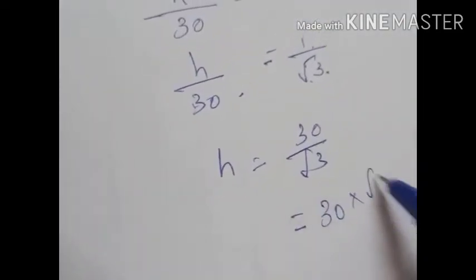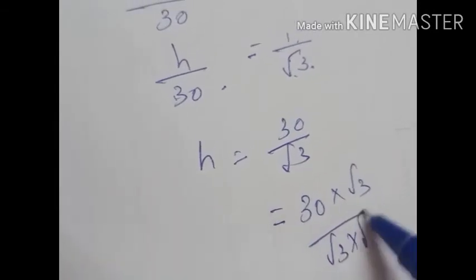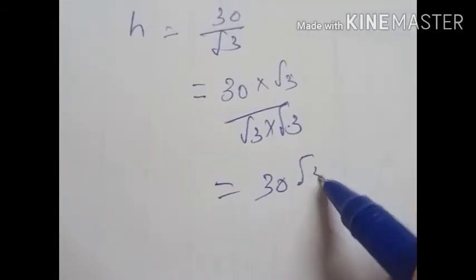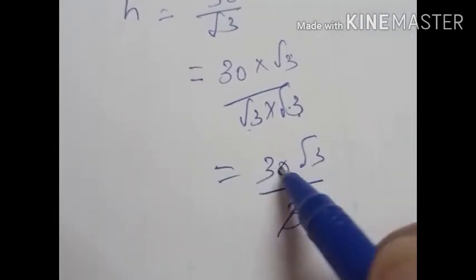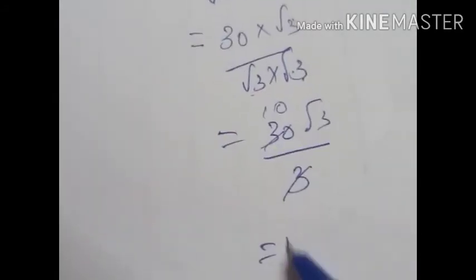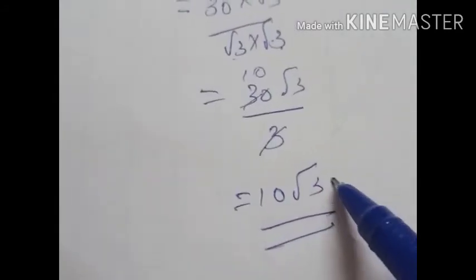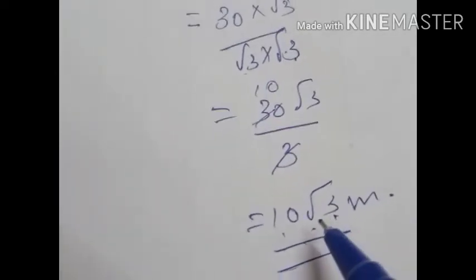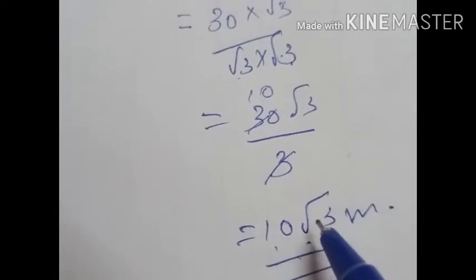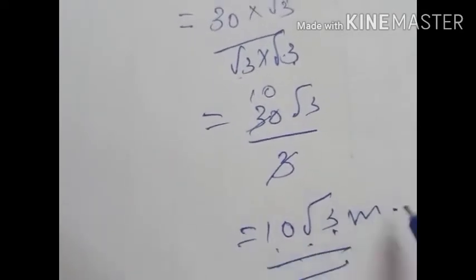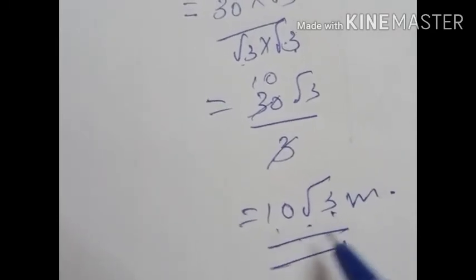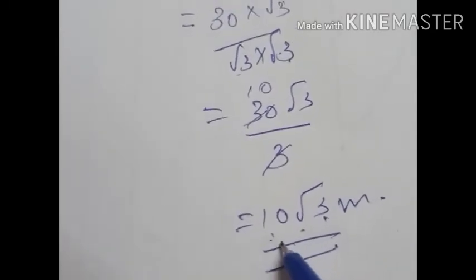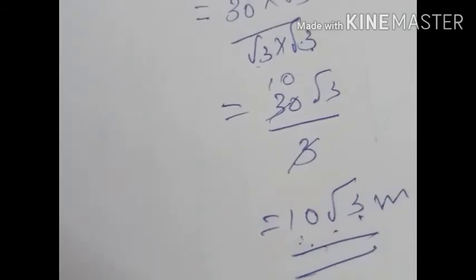Transposing 30 to here, then we should rationalize. We multiply both the numerator and denominator by root 3, so we get 30 root 3 by root 3 into root 3, which is 3. We get 10 root 3. So the height of the tower is 10 root 3 meter. If you want, you can multiply by the value of root 3, which is 1.732, or you can write it as 10 root 3 itself.